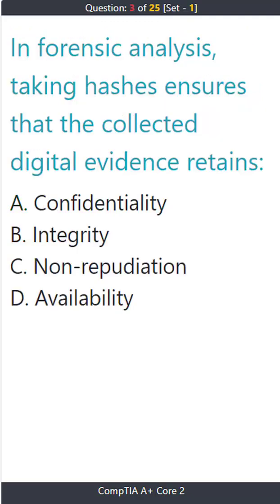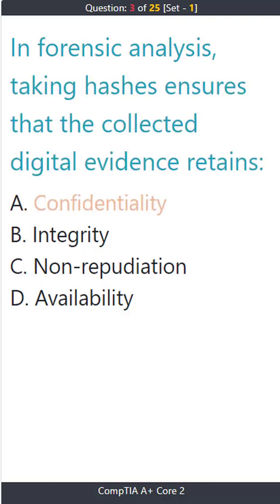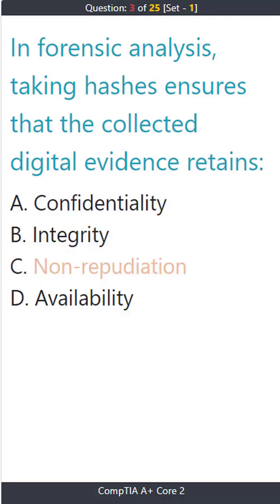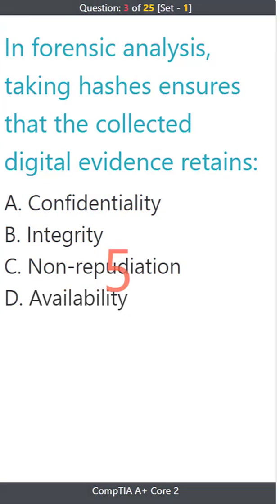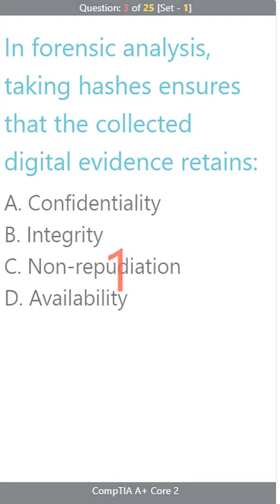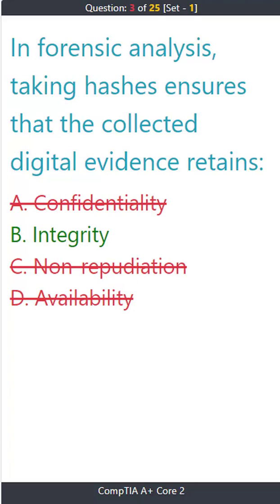Question 3: In forensic analysis, taking hashes ensures that the collected digital evidence retains which property? A) Confidentiality. B) Integrity. C) Non-repudiation. D) Availability. The correct answer is B: Integrity.